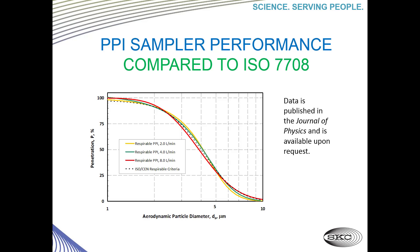Here you can see the performance of the three models of PPI samplers — 2, 4, and 8 liters per minute — compared to the ISO 7708 criteria. The data indicates that their performance is a precise match to the criteria, because the samplers are new and were designed to match ISO 7708. Note that the PPI performance data was published in a peer-reviewed journal, the Journal of Physics. Copies of the journal article are available from SKC upon request.